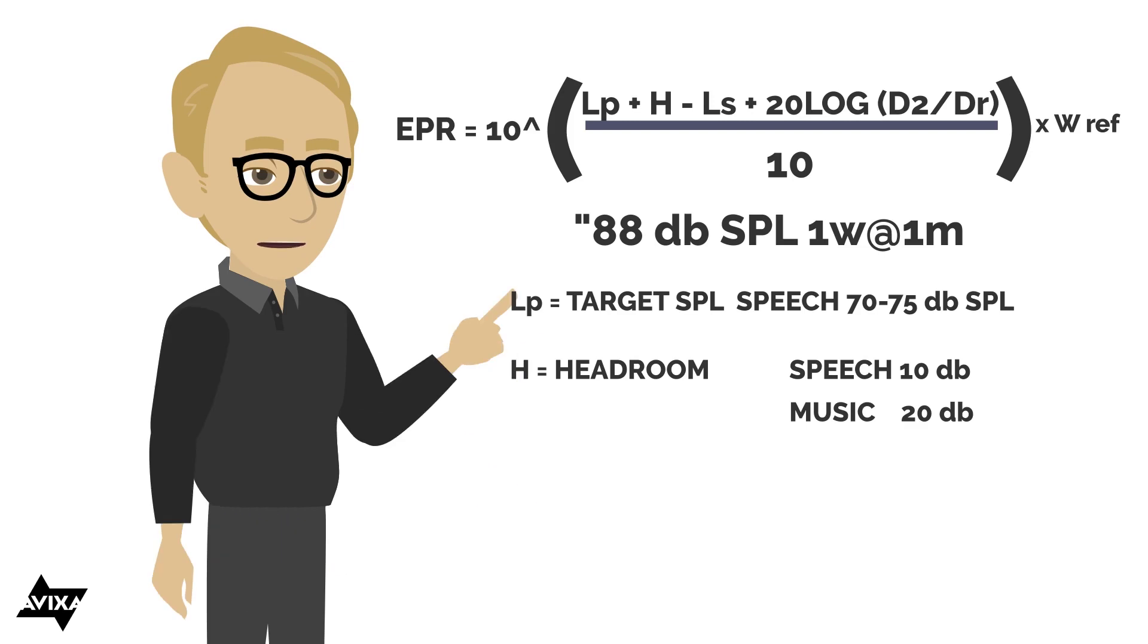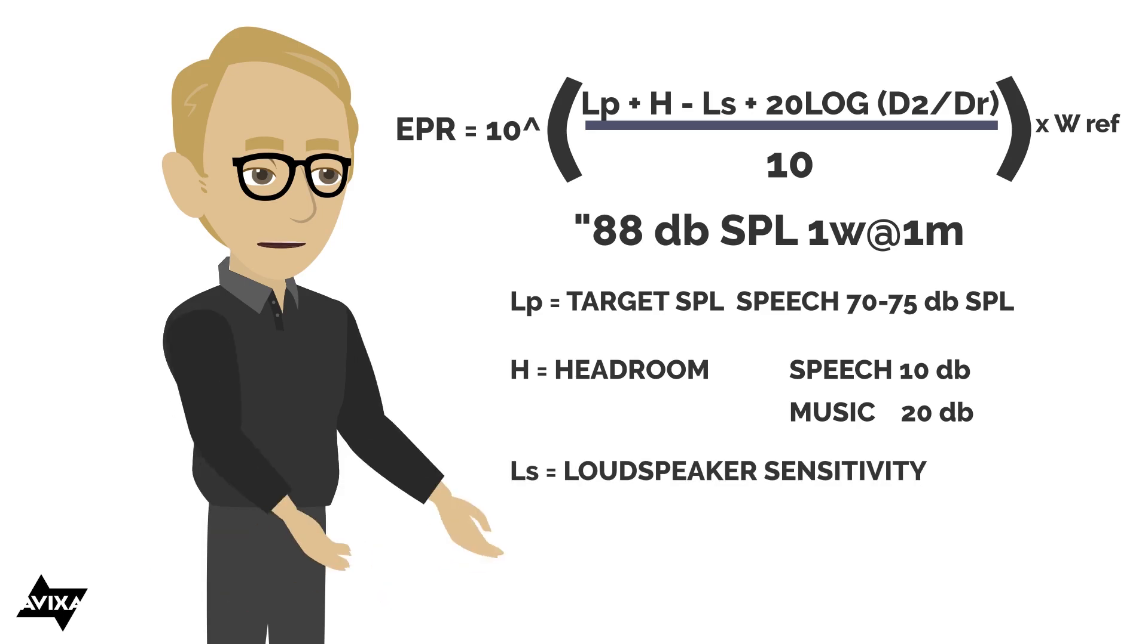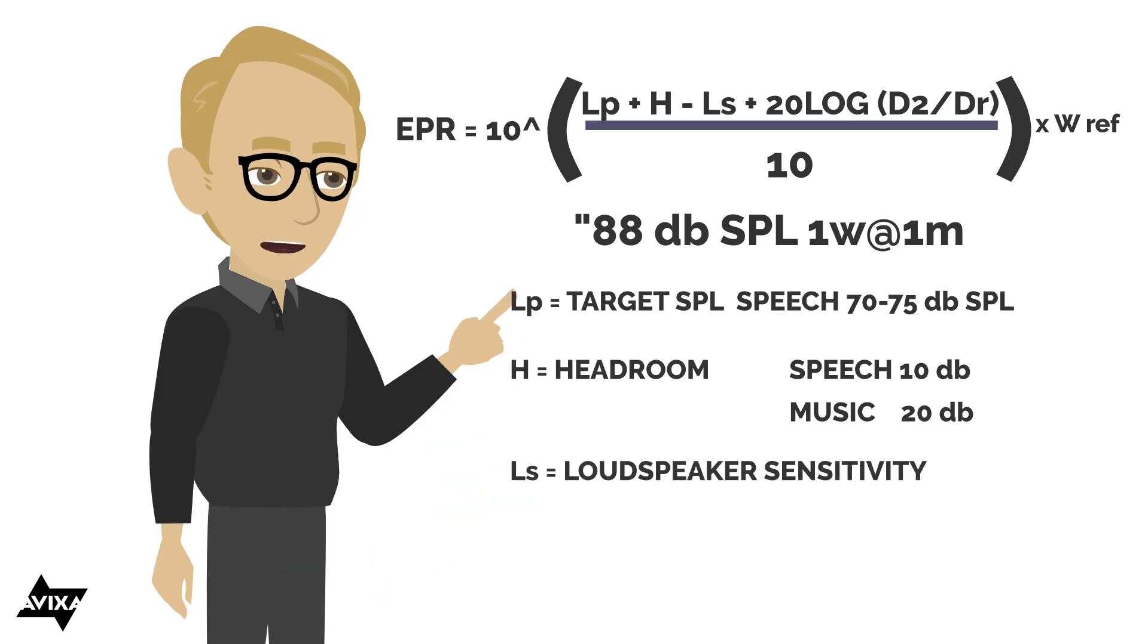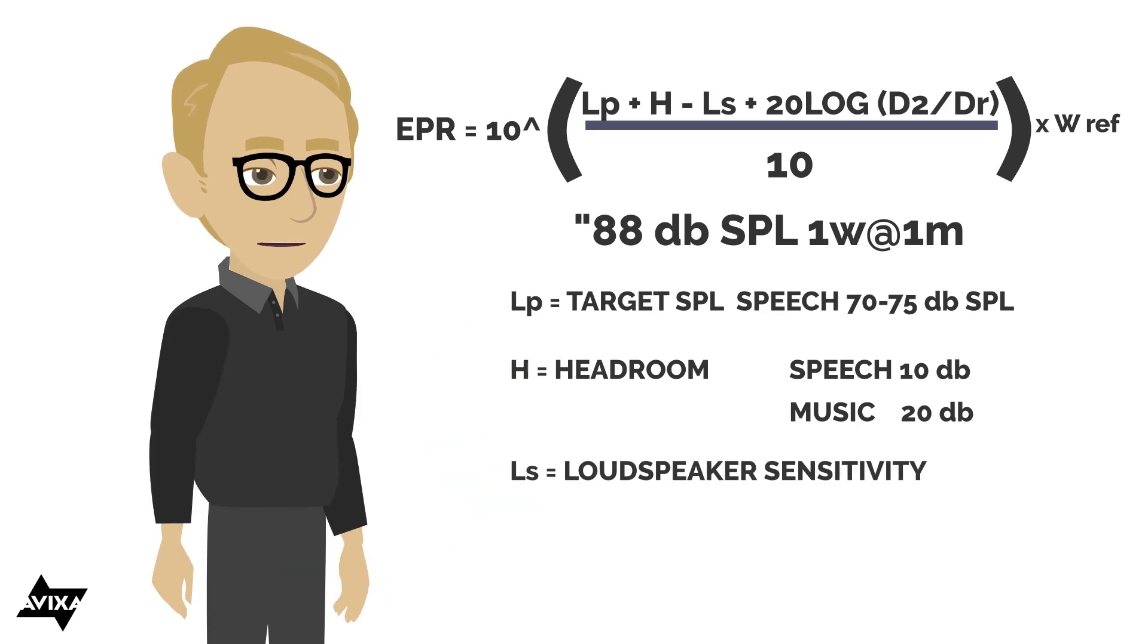If it's a speech only system, that's typically about 10 decibels. A music system can be as much as 20 decibels. Ls is the loudspeaker sensitivity. That would be the 88 as an example, the 88 dB SPL, so I get that from the loudspeaker's specification.